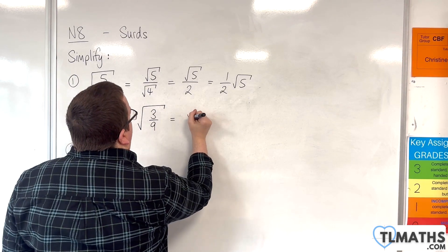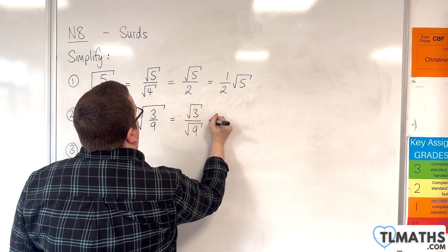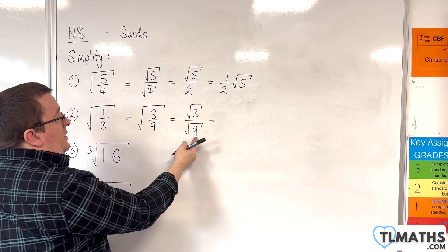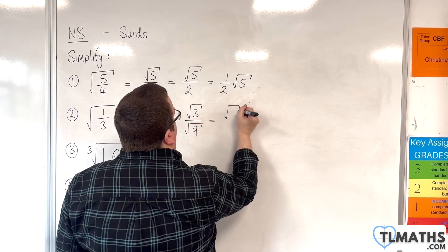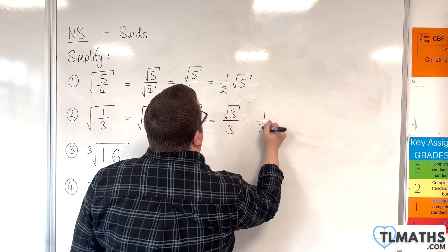That can then be written as the square root of 3 over the square root of 9. Now, the square root of 9 is, of course, 3. So, this is root 3 over 3. Or, 1 third root 3.